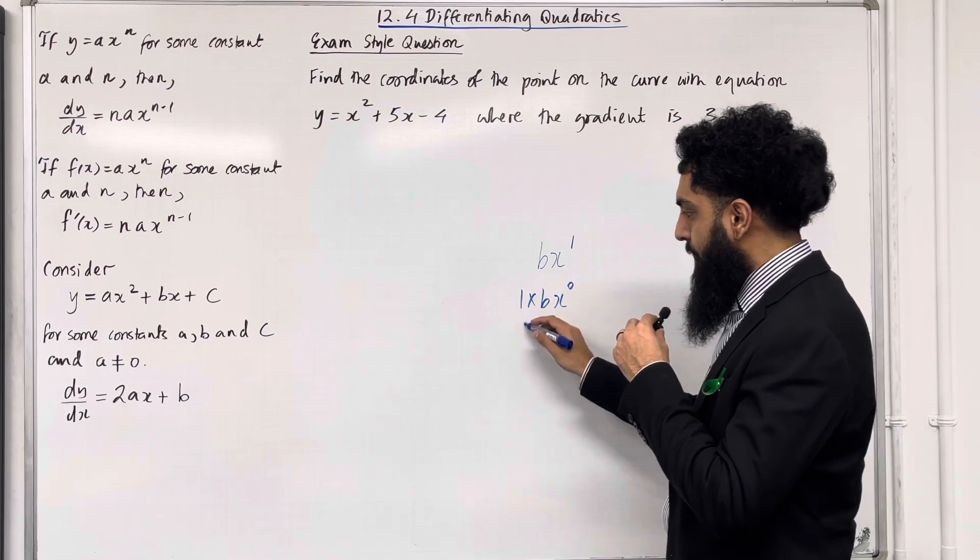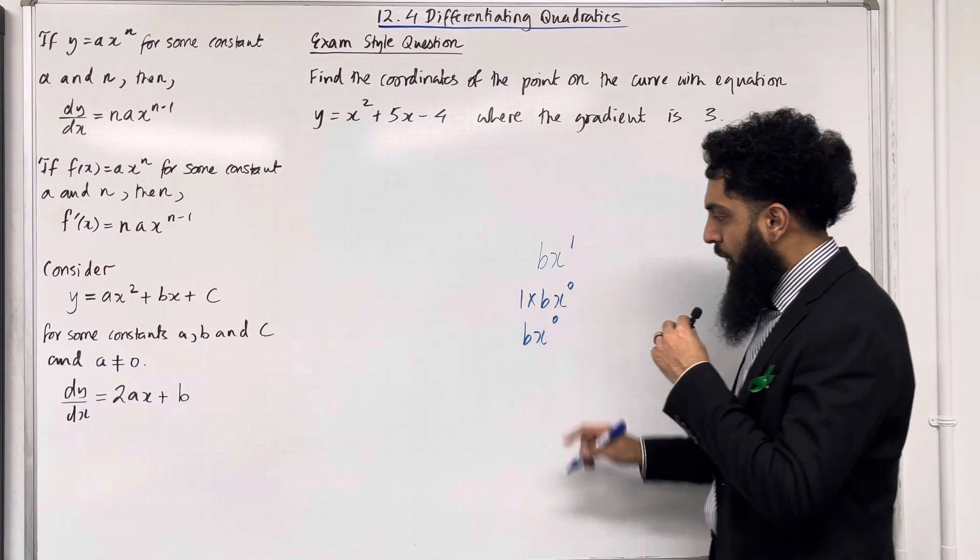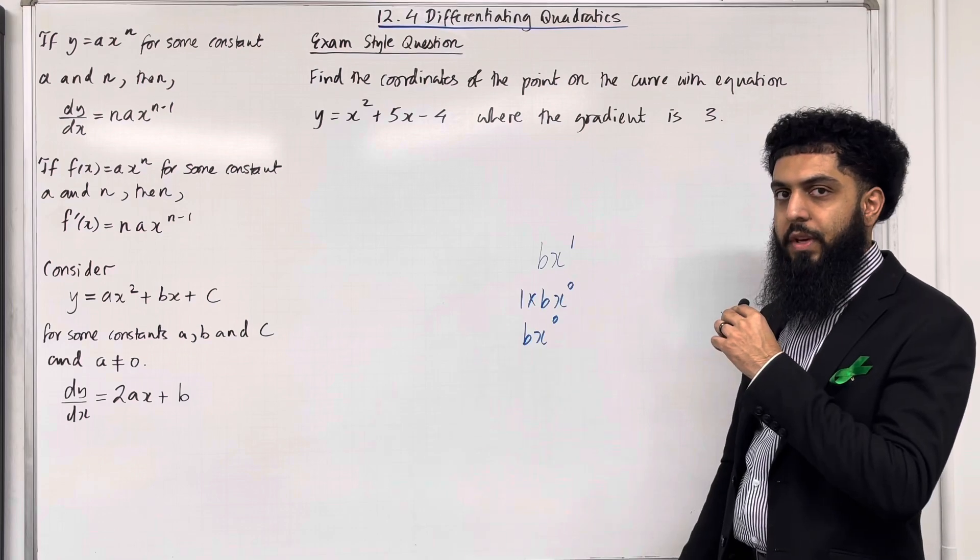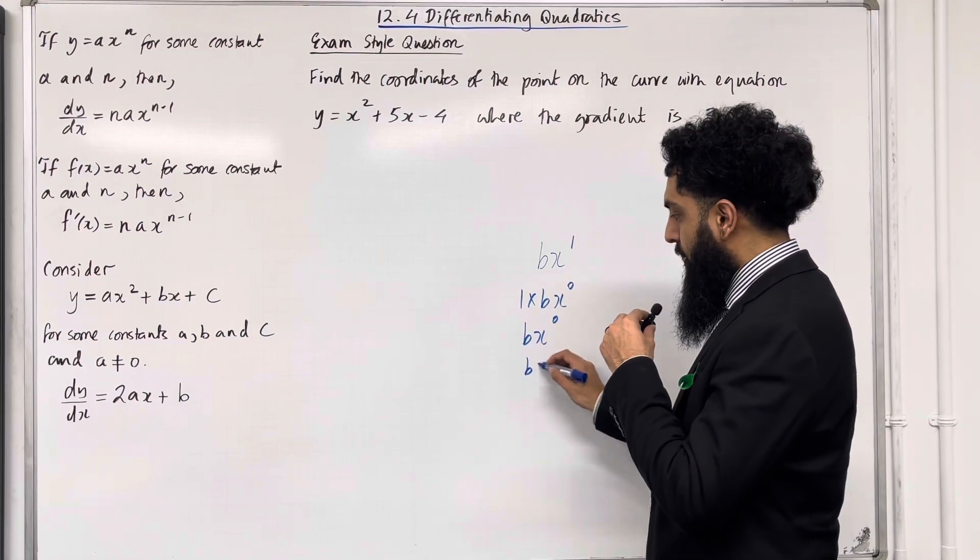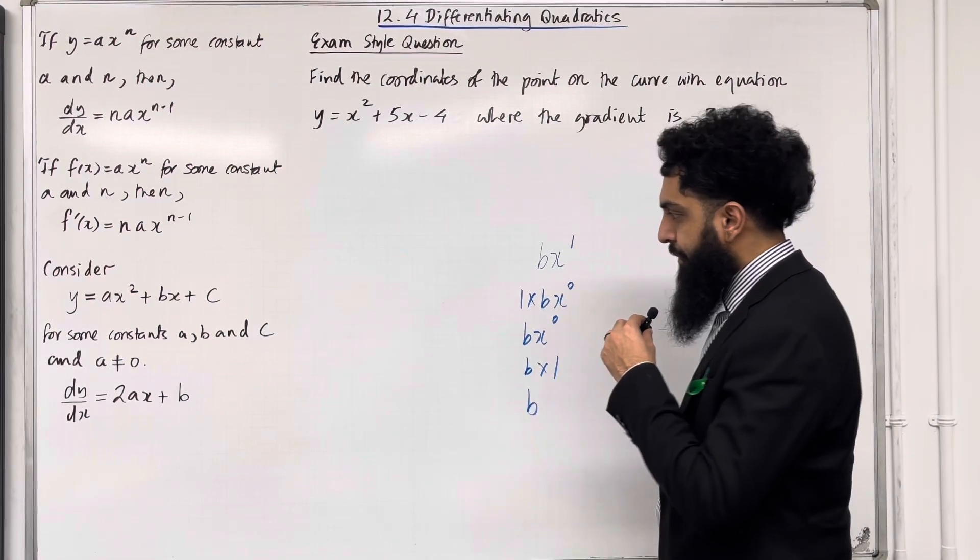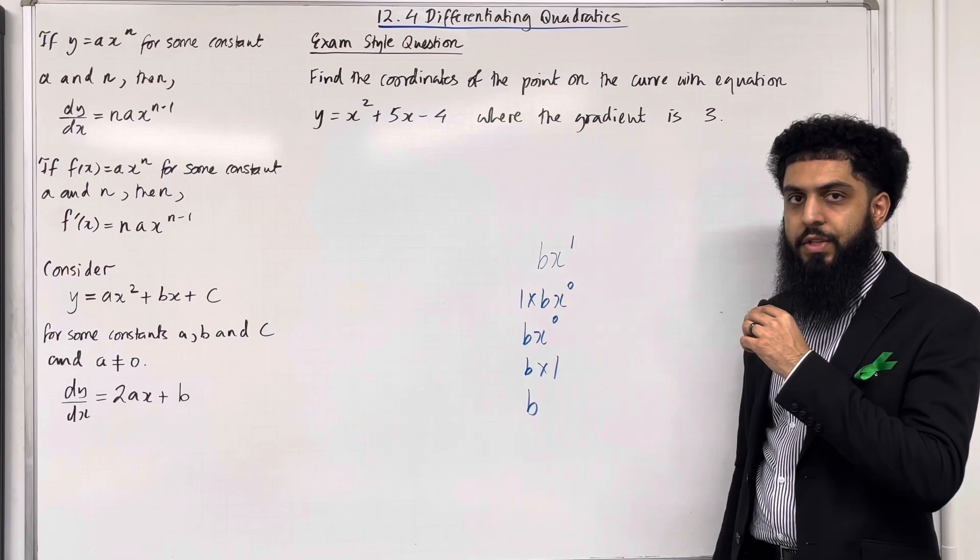So 1 times b is b, x to the power 0. But we know that anything to the power 0 is 1. So we've got b times 1, which is b. This is why bx differentiates to b.